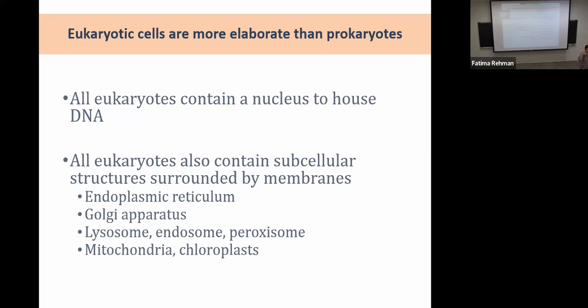With light microscopy you're seeing what's on the slide using light, whereas with electron microscopy the electrons are being bounced off the specimen and recorded elsewhere. With transmission electron microscopy you're able to see what the cell contains — you can see the structure inside the cell.